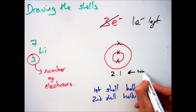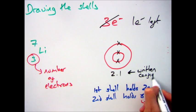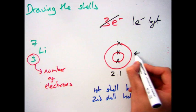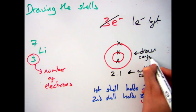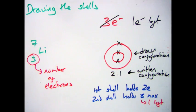Now what you will also notice here is I'm putting 2.1, that is the written electronic configuration. It's just showing in the first shell I have two, and one remaining in the second shell.